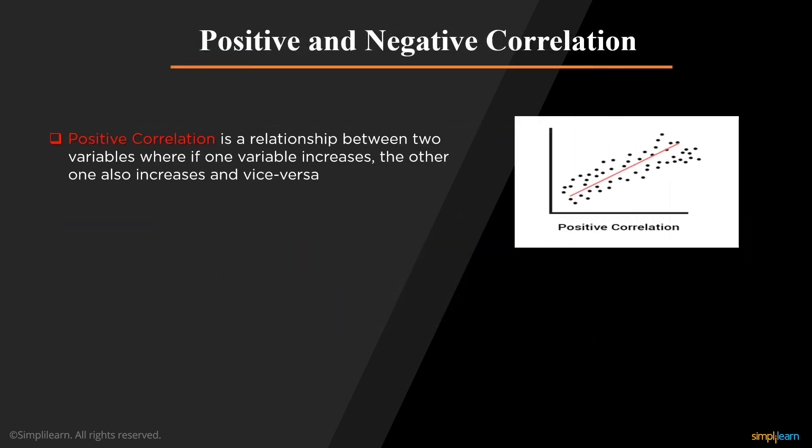A positive correlation means that a linear relationship is positive and the two variables increases or decreases in the same direction, as you can see from the graph. An example can be, as the number of trees cut down increases, the probability of soil erosion also increases.